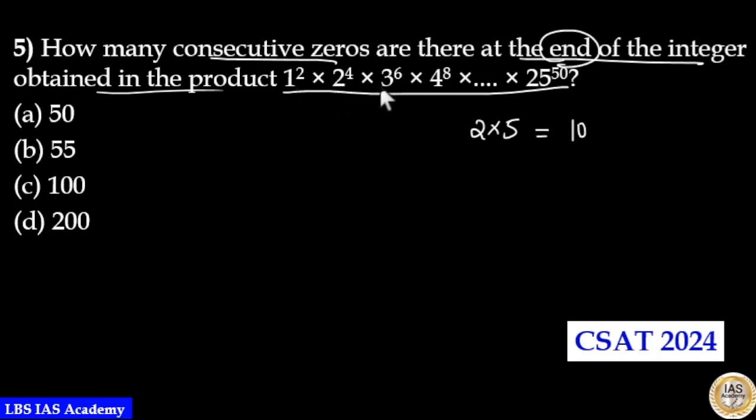If you look at this given expression, base numbers are 1, 2, 3 up to 25 and powers are 2, 4, 6 up to 50. Now it is clearly visible that the number of 2's is greater than the number of 5's.